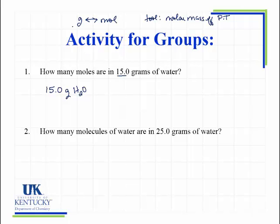The other big thing that we have learned is how to go between moles and the actual number. What do I mean by the actual number? How many atoms do you have? How many molecules do you have? This is kind of like saying — I'll use the word dozen — I could tell you I had three dozen donuts, or I could tell you I had 36 donuts. I'm giving you the actual number of donuts when I get down to the 36.